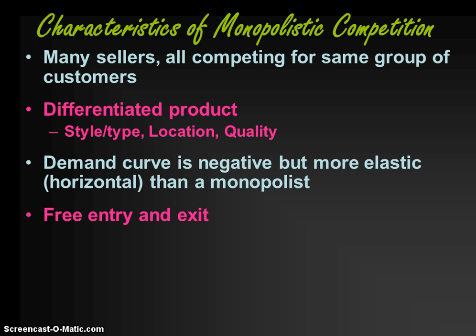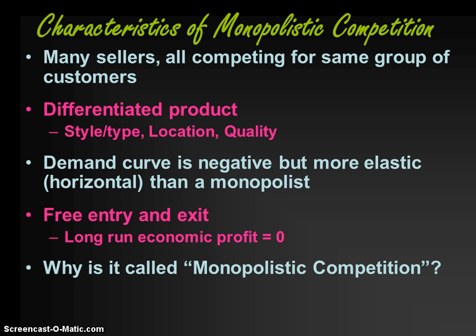There is free entry and exit into and out of the market, similar to perfect competition. People can come and go as they please, but they can't just stop paying their fixed costs of production. So if a firm is losing money, they'll hang in there as long as they can cover their variable cost of production and chip away at their fixed costs until they can exit the industry. Because of freedom of entry and exit, the long-run economic profit for monopolistic competition is zero — they earn a normal rate of return.